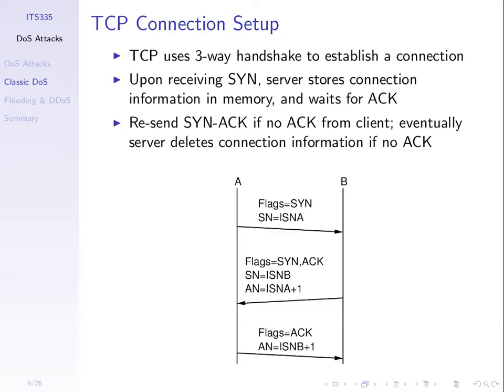A client initiates a connection to a server. The server allocates memory, sends back a SYN-ACK, and waits for the ACK. If it doesn't receive the ACK, it eventually gives up and moves on. Of course many clients can do this to the server at the same time — this server may be receiving many SYNs from many different clients. Think of a web server: many people contact it at the same time, wanting to browse the website. Before transferring the request and web page, we set up a TCP connection, then there's the request and response.